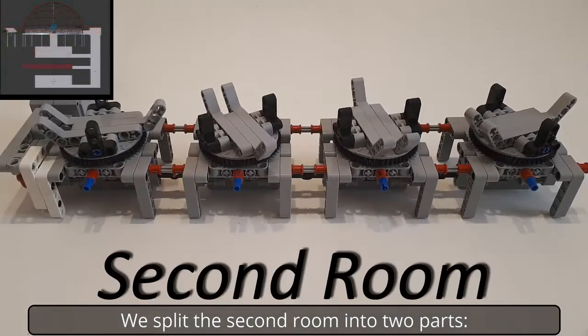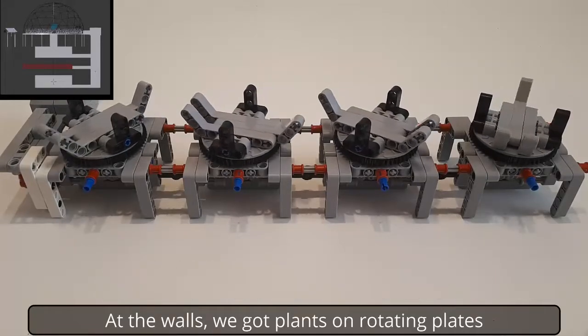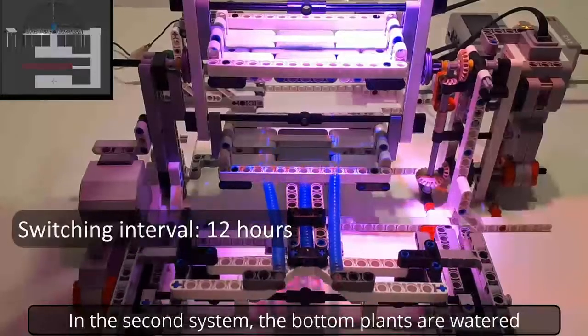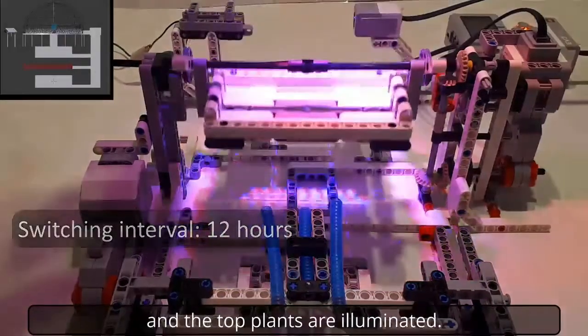We split the second room into two parts. At the walls we got plants on rotating plates so they are illuminated evenly from all sides. In the second system the bottom plants are watered and the top plants are illuminated.